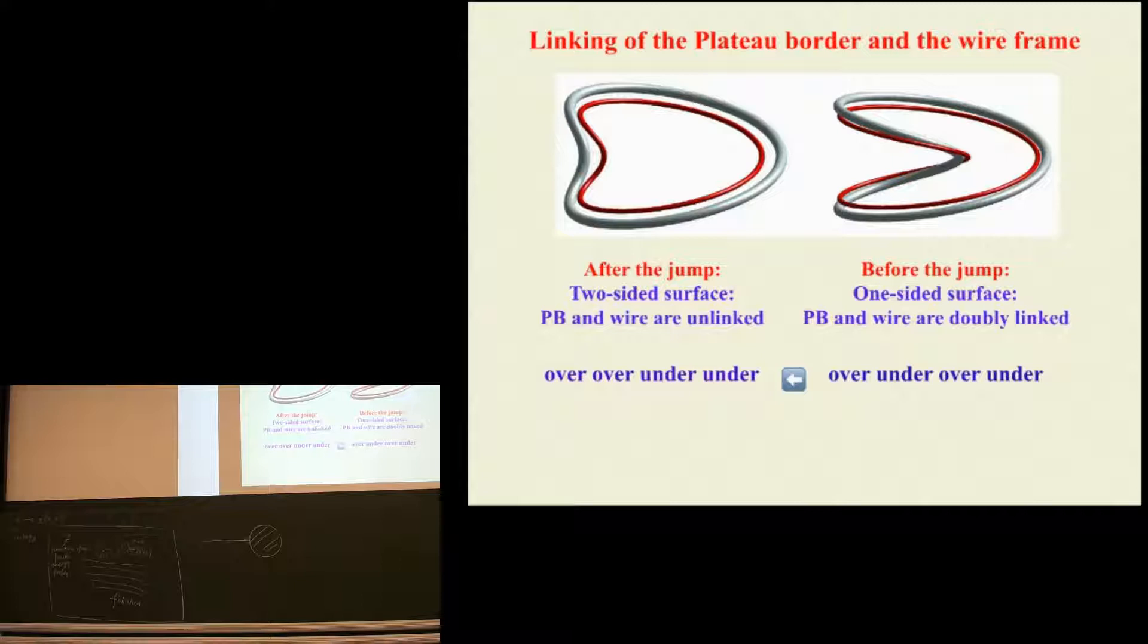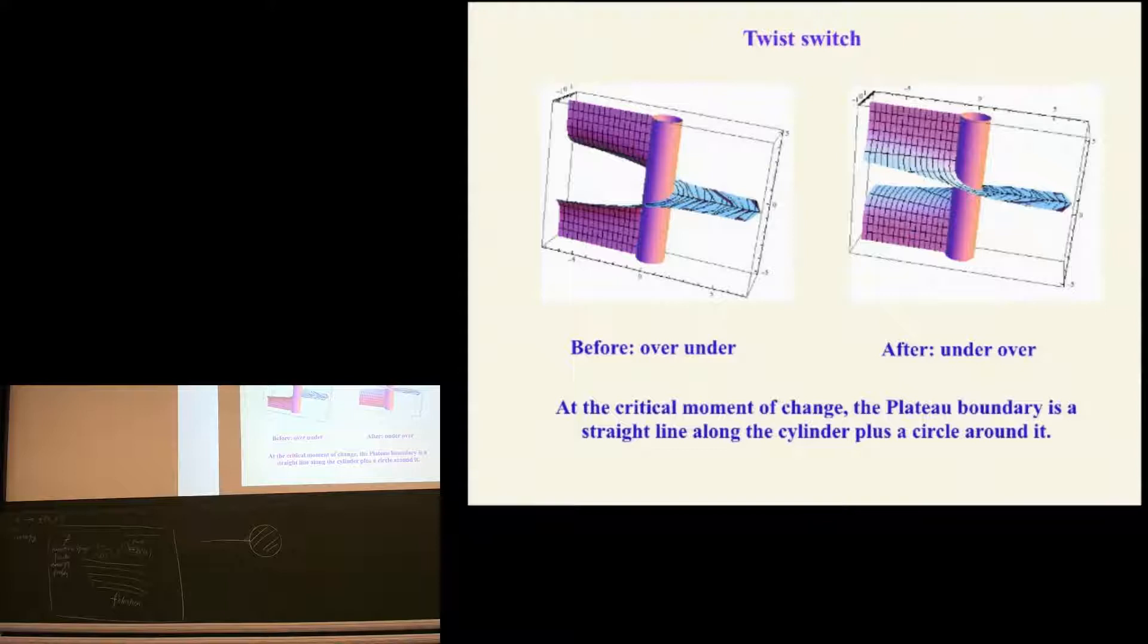But at the moment of collapse, that under, over changes to an over, under. So what was over, under, over, under becomes over, over, under, under. And when you have an over, over, that can be pulled off. And an under, under can be pulled off. It's not linked at all. So after the jump, the plateau border is not linked with the boundary. And that is a feature of a two-sided disc. So you're into the, you've jumped from the topology characteristic of a Möbius film, to the topology of a disc spanning the wire.